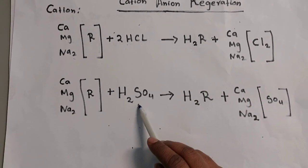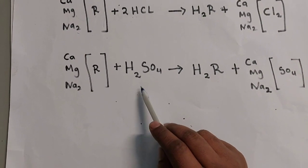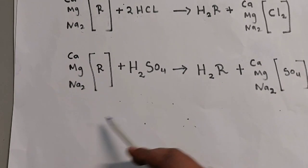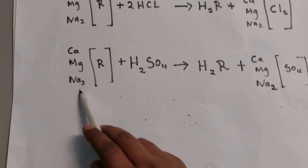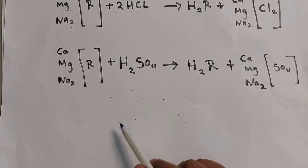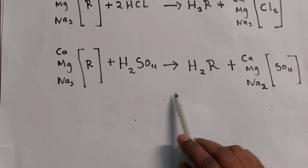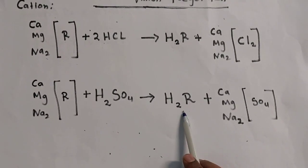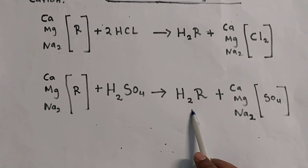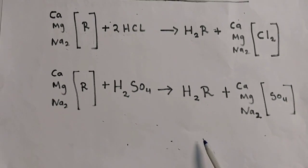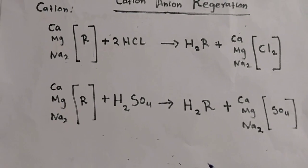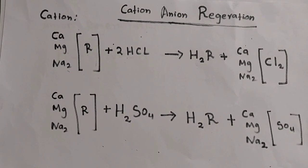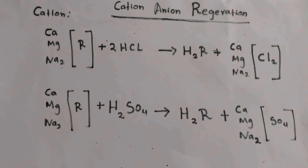At the same time, if you use H2SO4: calcium sulfate, magnesium sulfate, sodium sulfate — each goes to separate. Finally we get the pure resin. After this process we use the filtration process, and we do it continuously — it is not a one-time thing.